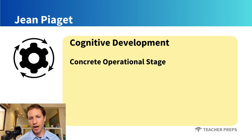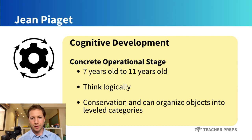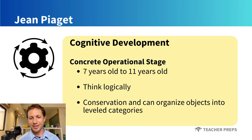Moving on, the concrete operational stage happens in children from the age of 7 to 11. At this stage, children begin to think logically about concrete events. They understand the concept of conservation and can organize objects into leveled categories.